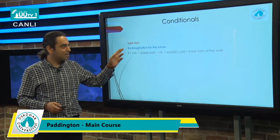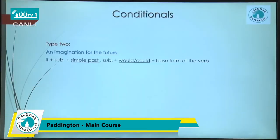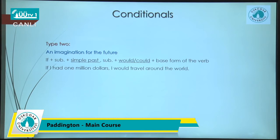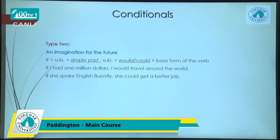Whenever you have 'would' in a sentence in English, you can imagine doing whatever you want. Look at this example: 'If I had one million dollars, I would travel around the world.' Do I have it now? Of course not, but I can imagine for the future. That's an imagination mentioned in a conditional style. Another example: 'If she spoke English fluently, she could get a better job.' She's imagining that if she were able to speak English fluently, she could get a better job.